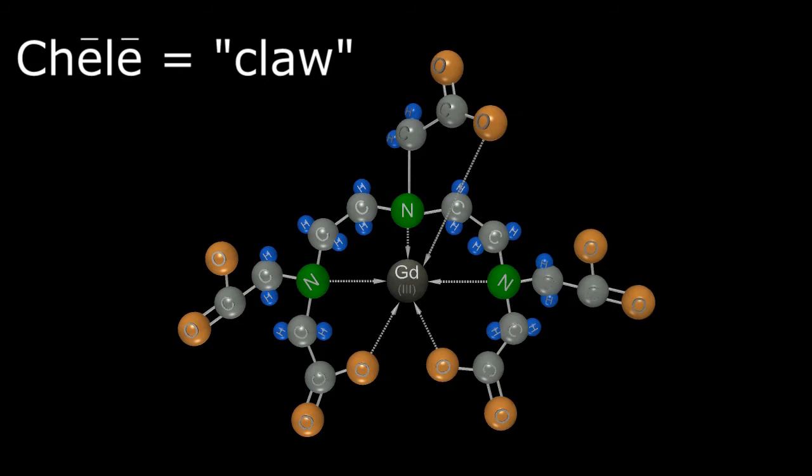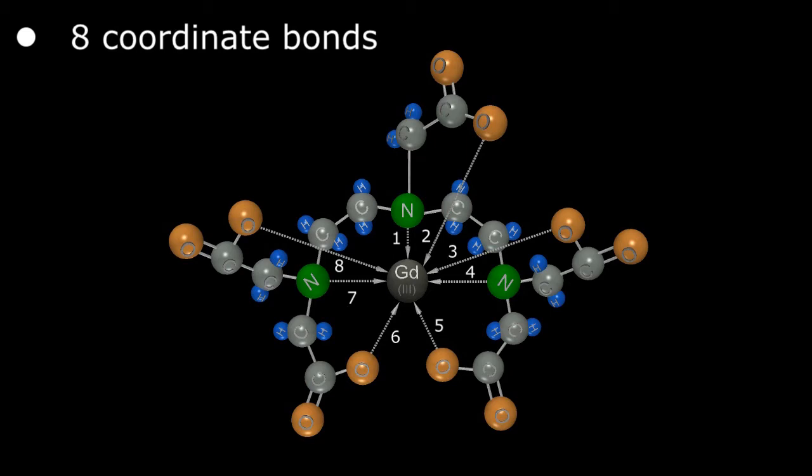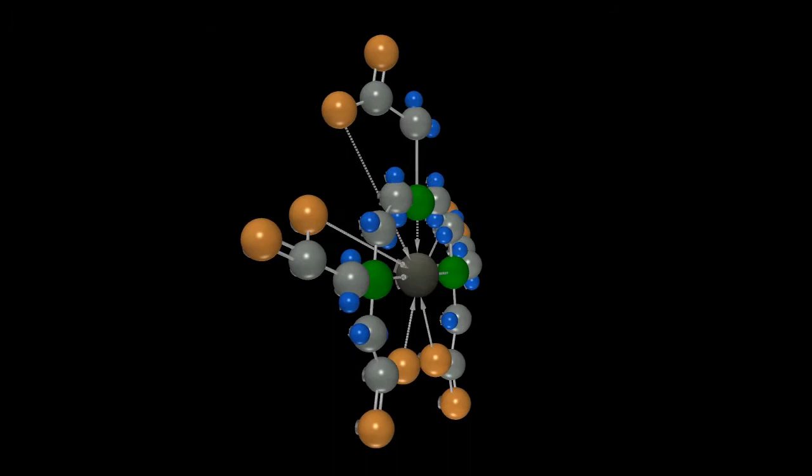Notice there are eight coordinate covalent bonds between DTPA and the gadolinium ion. Almost all of the current chelating agents contain eight nodes that are available for dative bonding leaving one open node. The ninth node allows a weak dative bond to form between the gadolinium ion and water molecule. This bond exchanges frequently and allows multiple water molecules to experience the paramagnetic effect of the gadolinium ion and thus provide the desired T1 shortening effect of the gadolinium contrast agent.